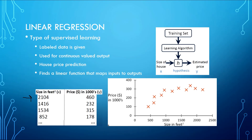First of all, we feed the training data to our learning algorithm. Our algorithm finds a linear function, represented by H here. The goal of this function is to map the input features of the training data to the output of the training data. All of this process is named as the training of our model.